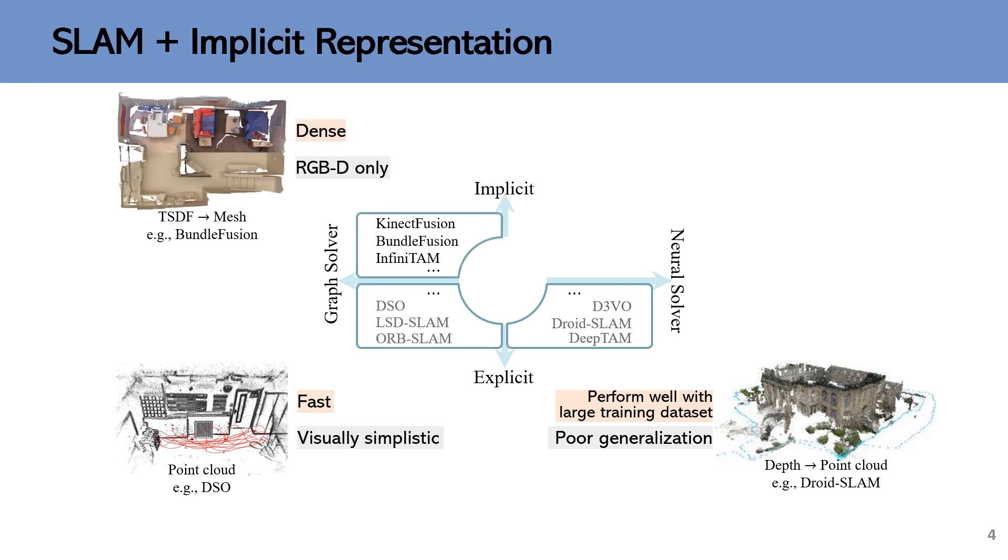To attain dense reconstruction, the implicit representation truncated signed distance functions are used to reconstruct a continuous surface from RGB-D sequence. Although they can recover mesh models, view rendering quality is still limited.